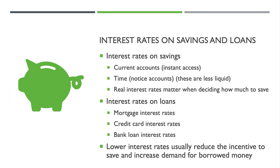Interest rates clearly affect the decision about whether to save or take out a loan. We look at the interest rate on savings — that could be highly liquid current accounts with instant access, or a time notice account where you give up your savings for a period, typically at least a year. We typically look at the real return on savings rather than the nominal interest rate. Then there's the cost of taking out a loan — it could be a mortgage on a property, a credit card interest rate, or a personal loan, secured or unsecured.